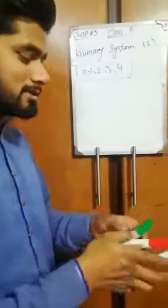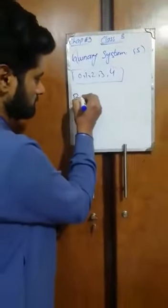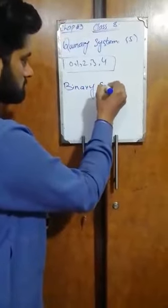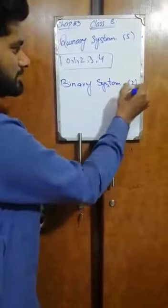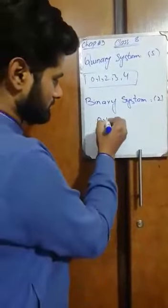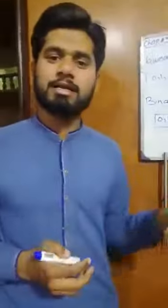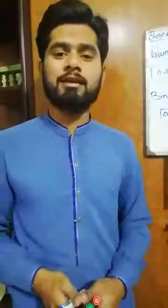Next, we have the binary number system. Its base is 2. The word 'binary' means 2. In this system, there are only 2 digits included: 0 and 1. This number system is very important in communication technologies and computer systems, because the language used in computers is based on this binary system.